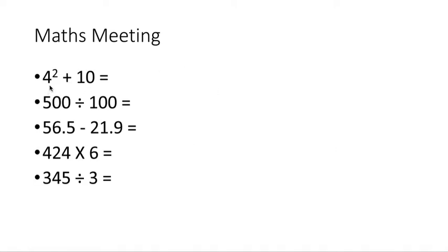We've got 4 squared — the little 2 there means that we times 4 by itself twice, that's 4 times 4. And then we're going to add 10 to it. 500 divided by 100 — remember to use your place value grid to help you with this. Then we've got a column subtraction, 1 decimal place minus a 1 decimal place. And then we've got a column multiplication: 6 times 4, 6 times 20, 6 times 400 — combine it to find your answer.